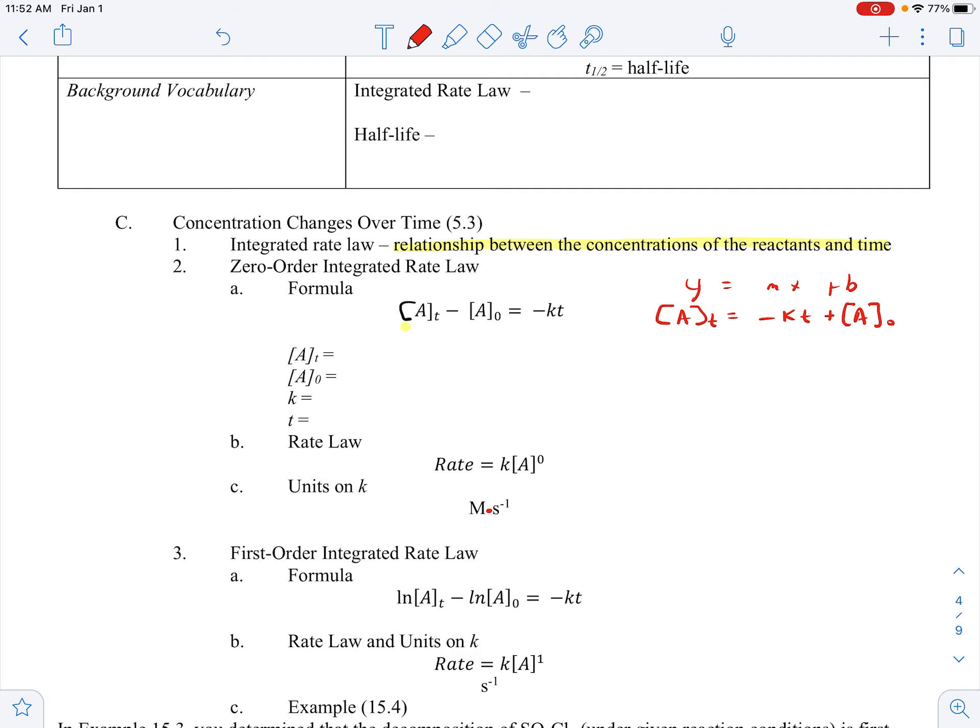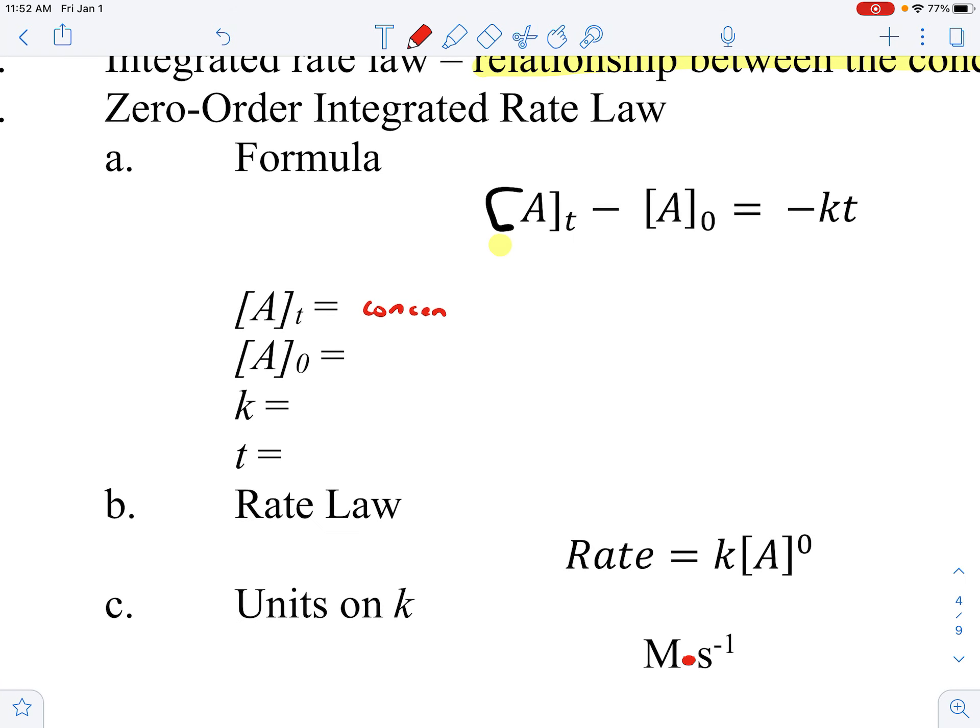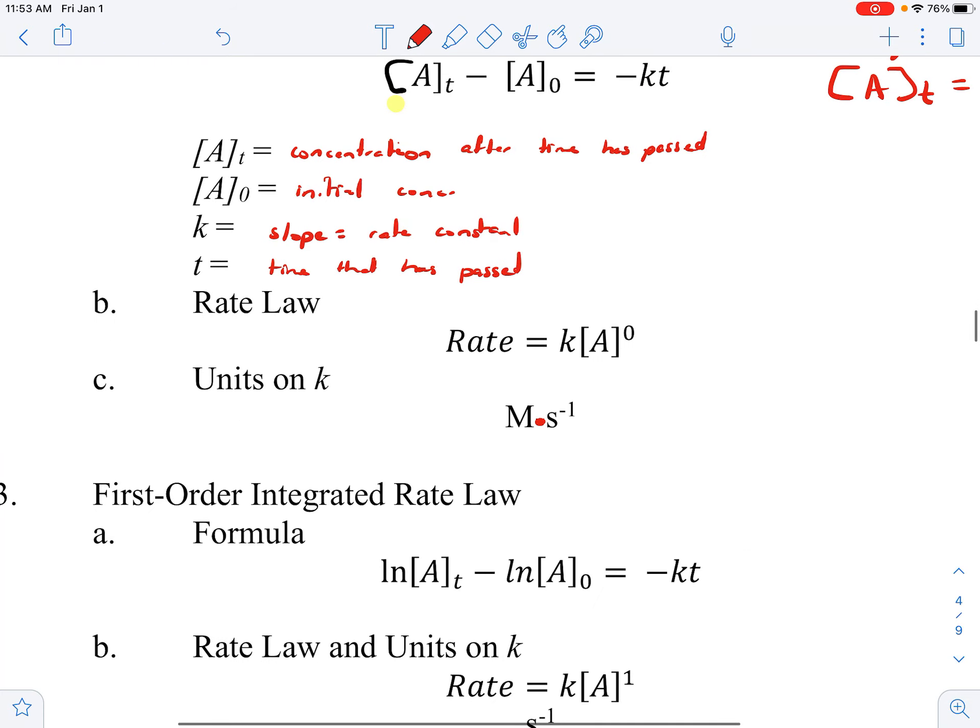So [A]_t is concentration after some time has passed. [A]_0 is our initial concentration. Our k is still our, well, it's also going to be our slope. That's where my mind went first, but it's also our rate constant. And t is that time that has passed. And remember, our rate law is rate equals k times [A]^0, right? This is zero order. And our label on that would be molarity per second.